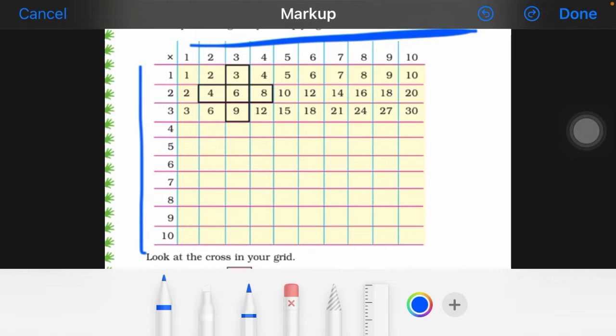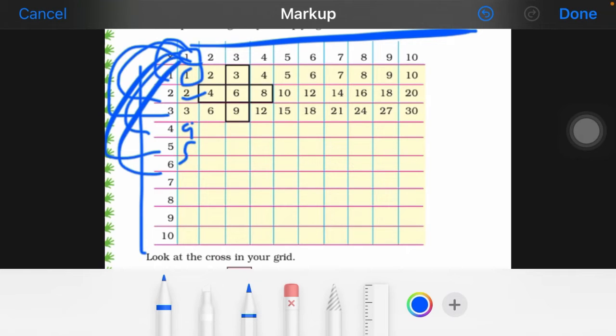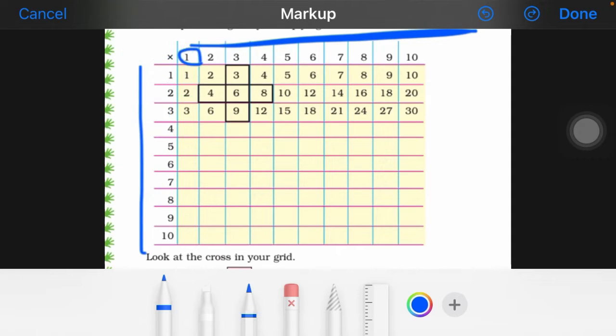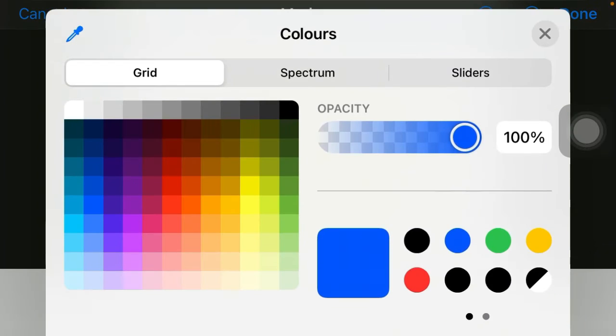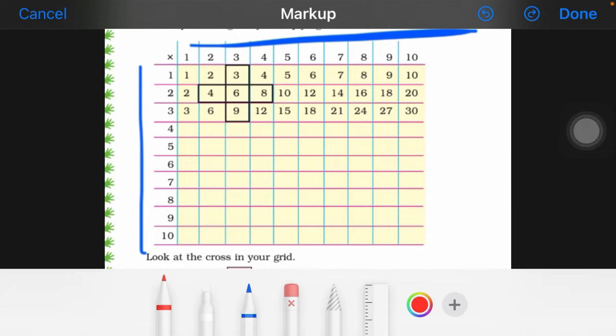Let's check here. One table you can fill here first line. You have to select one times one is one, one times two is two, one times three is three, one times four is four, one times five is five, one times six is six, one times seven is seven.